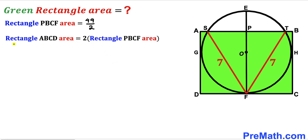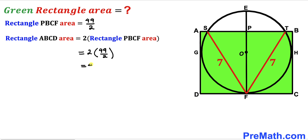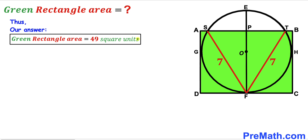Recalling that the area of rectangle ABCD equals two times the area of rectangle PBCF, and since the area of PBCF is 49/2, we get: 2 × (49/2) = 49 square units. So the area of the green rectangle ABCD turns out to be 49 square units. That's our final answer.